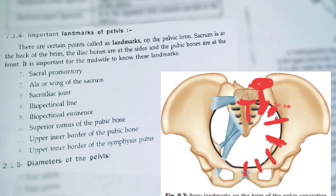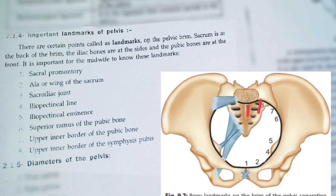And the inner border of the symphysis pubis. These are the eight landmarks in short: sacral promontory, ala or wings of sacrum, sacroiliac joint, iliopectineal line, iliopectineal eminence, superior ramus of the pubic bone, upper inner border of the pubic bone, and upper inner border of the symphysis pubis.